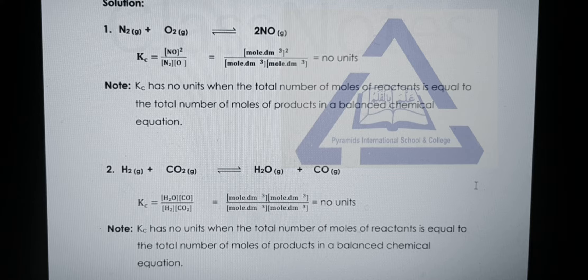Question one is the reaction between nitrogen and oxygen for the production of nitrogen oxide. For units, first write the equilibrium constant expression, then write concentration in moles per cubic decimetre. After cancelling concentrations, this expression has no unit, because the total number of moles of reactants equals the total number of moles of products in the balanced equation. Write the solution of question two on your notebooks as shown on your slides.